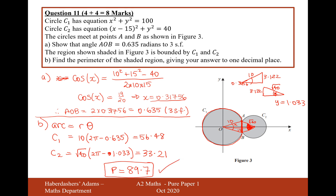That was really not much of an equations-of-circles problem, but more of an arc length problem combined with cosine rule and inverse sine. That's the answer to question 11, worth eight marks. Let's now move on to question 12.